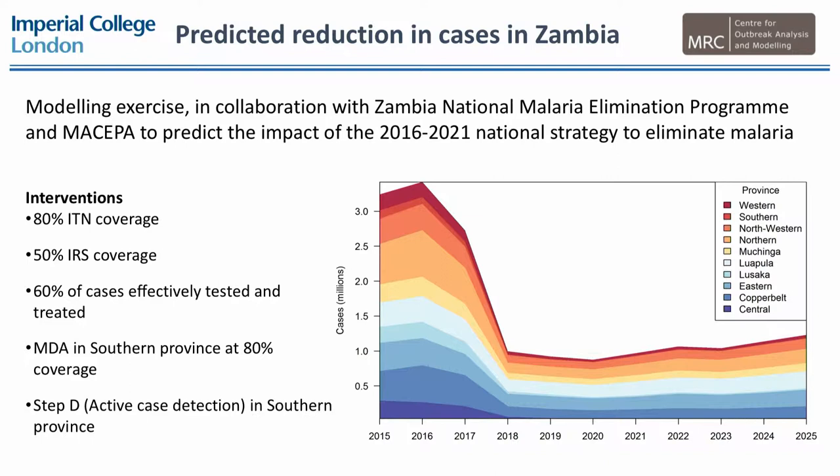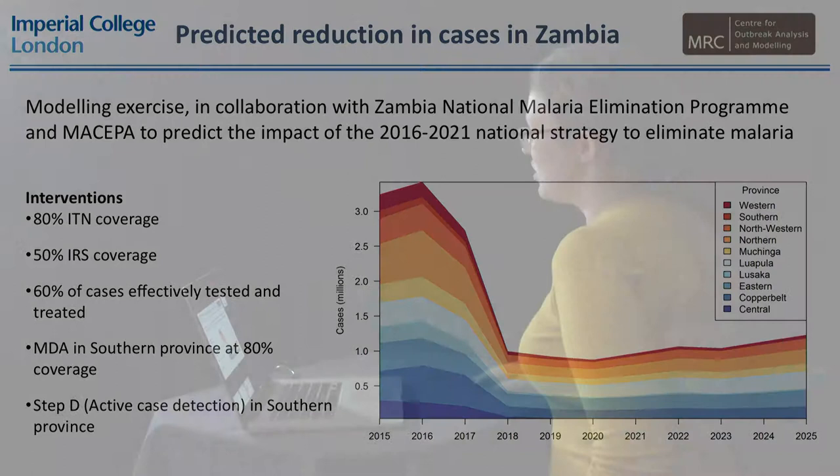We used a mathematical model of malaria transmission to simulate this package of interventions and predict the outcome going into the future. You can see here incidence over time: initially in 2016 we're at about 3 million cases, and as the interventions come into place in 2017 we see a very sharp reduction in incidence down to a predicted 1 million cases per year, down from 3 million.